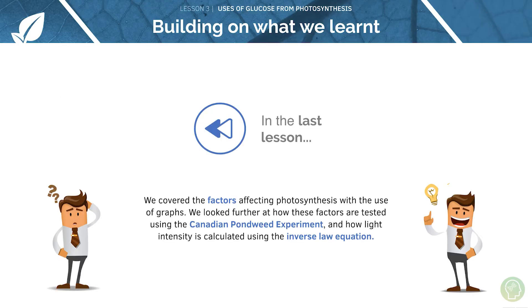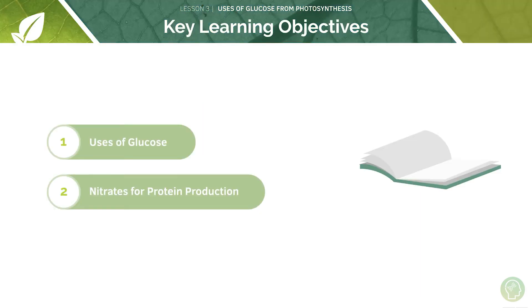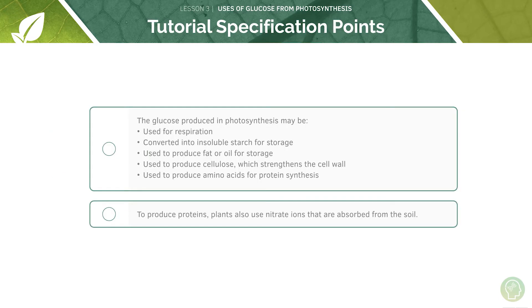In the last session we had a look at how the rate of photosynthesis is affected by various limiting factors. We looked at how we can measure this using the Canadian pond weed experiment, which comes up a lot in exams, so do go back and listen to that if you're not so sure. And finally we had a look at the inverse law equation. So today is going to be a slightly lighter tutorial, just having a look at the use of glucose and the use of nitrates, and how both of these together can be used for plant protein production.